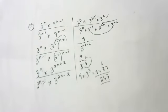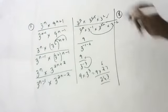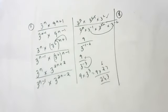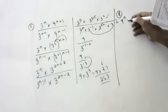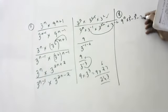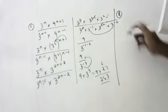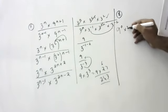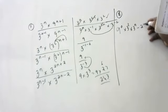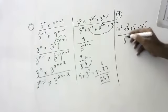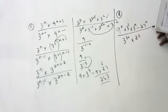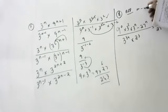Last question for the day. The question is: 9 to the power n into 3 to the power 2, into 3 to the power n minus 20 to the power n, divided by 3 to the power 3m into 2 to the power 3, equals 1 by 27. We need to prove that m minus n equals 1. This is 3m and this is 3m.